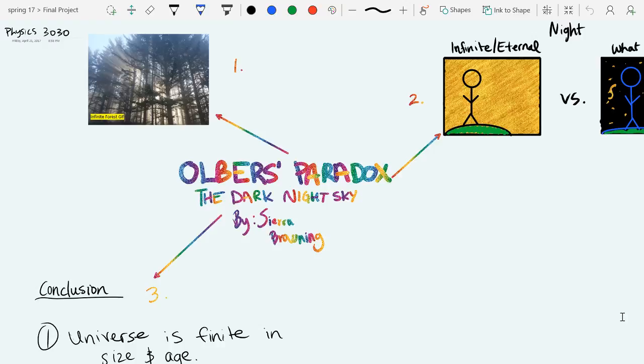Named after Heinrich Wilhelm Oberst, who is a German astrologer, it also has another popular name called the Dark Knight Sky Paradox.